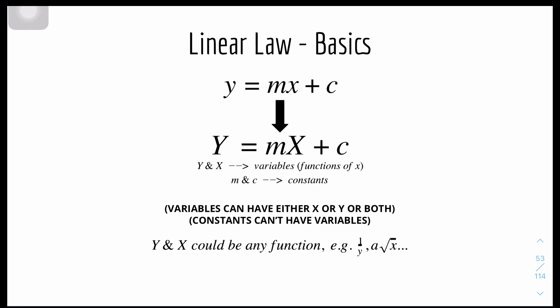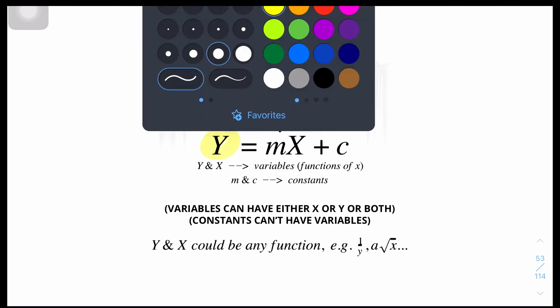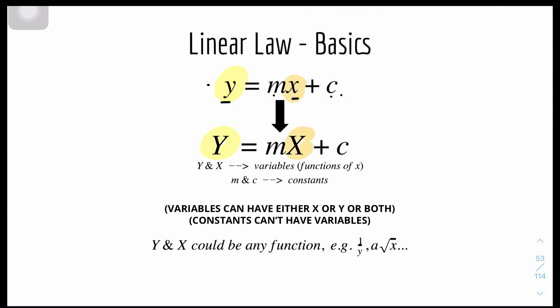Here are some basics. We all know the most basic equation of a straight line, y equals mx plus c, where y and x are both variables and m and c are constants, where m is the gradient and c is the y-intercept. To turn it into Linear Law, we basically have to turn it from this small y to big Y, and small x to big X. And the m and c remain the same.